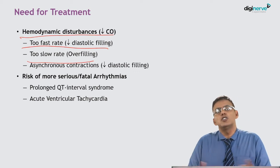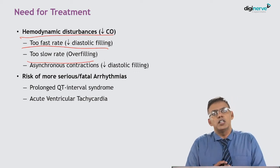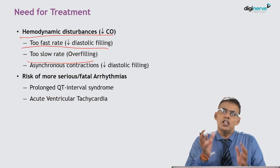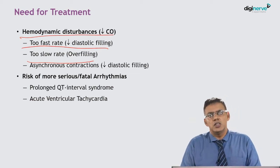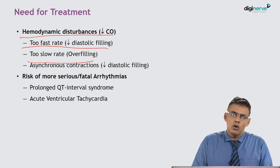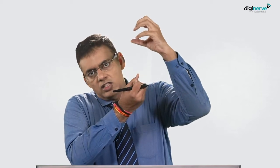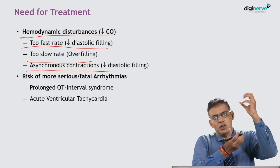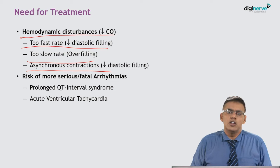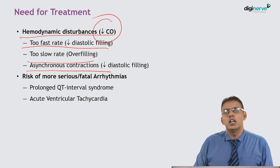If the heart rate is too slow, the ventricles fill to full capacity but may not be able to pump the complete volume of blood, again leading to insufficient oxygenation to the tissues. Thirdly, if there is asynchronous contraction — where atrial and ventricular contractions are not synchronous — the coordinated filling and ejection of blood is disrupted, leading to decreased cardiac output and requiring treatment.